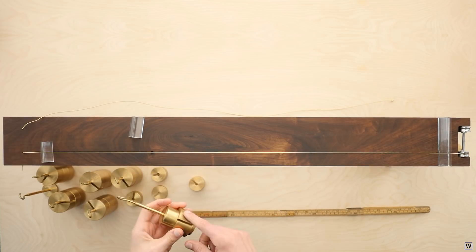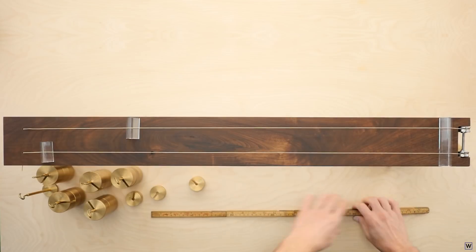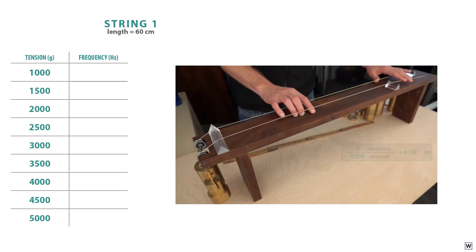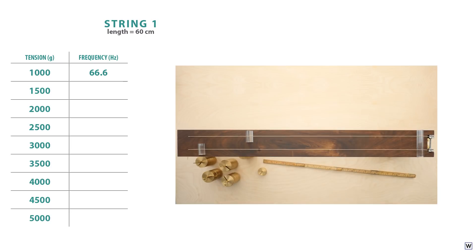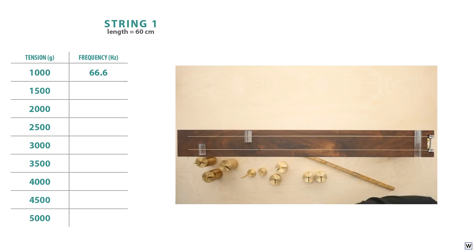Just as before, we'll start by making some observations. First, we'll fix the length of our string to 60 centimeters, and measure the frequency as we change tensions. This relationship is a little trickier than our length vs frequency relationship, so we'll take more observations this time.